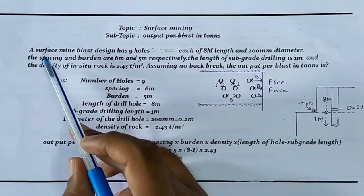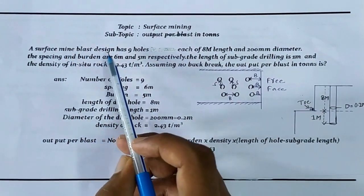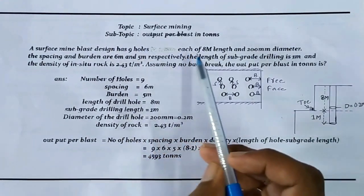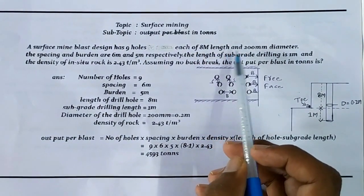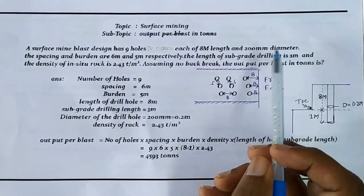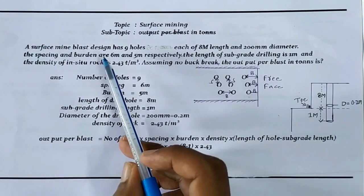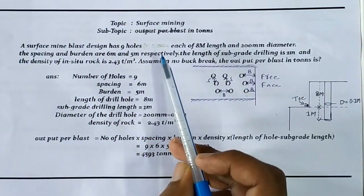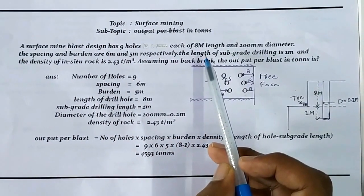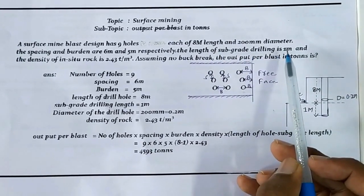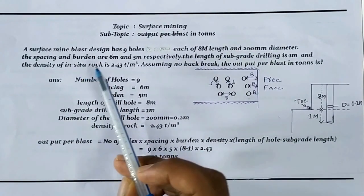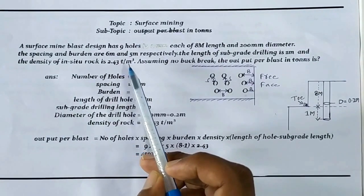Let's start the problem. A surface mine blast design has 9 holes, each of 8 meters length and 200mm diameter. The spacing and burden are 6m and 5m respectively. The length of subgrade drilling is 1m, and the density of in-situ rock is 2.43 tons per cubic meter.